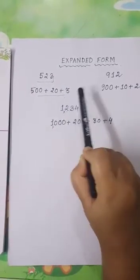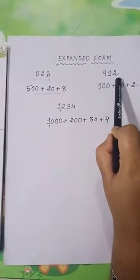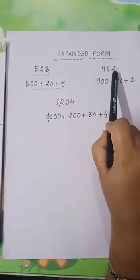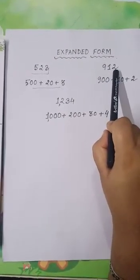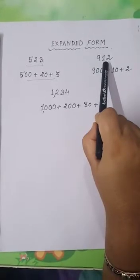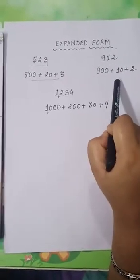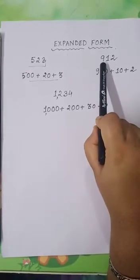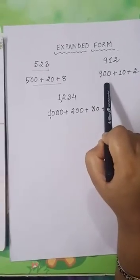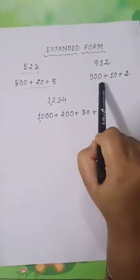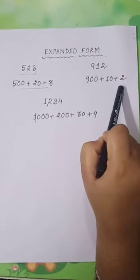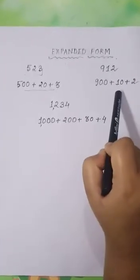In the same way, let us take one more example: 912. The digit 2 is in the 1's place, so the value of 2 is 2. The digit 1 is in the 10's place, so the value of 1 is 10. And the digit 9 is in the 100's place, so the value of 9 is 900. Using the addition sign between these place values, I have written 912 in its expanded form as 900 plus 10 plus 2.